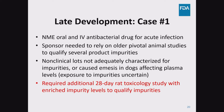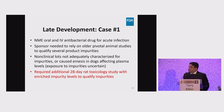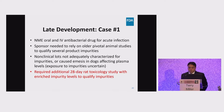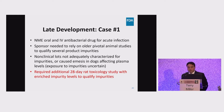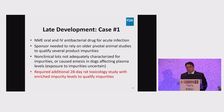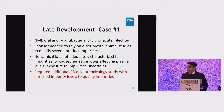I would now like to describe three cases where non-clinical deficiencies were noted late in development and impacted the NDA submission and review. The first case was for a new molecular entity oral and IV drug to treat an acute infection. The sponsor needed to rely on older pivotal animal studies conducted decades ago to qualify several product impurities. It was determined that the impurity profiles in these non-clinical lots were not adequately characterized, and marked emesis noted in dogs throughout the study likely affected plasma levels.